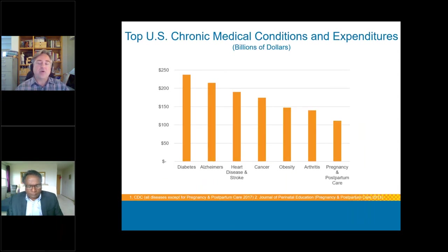These are the top U.S. chronic medical conditions by cost and expenditures as of 2017 per the CDC. Number one is diabetes, followed by Alzheimer's disease, cardiovascular disease, cancer, obesity, arthritis, pregnancy, and postpartum care — and many of these are amenable to telehealth services.